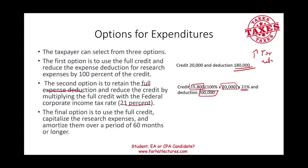The third option is to use the full credit now and amortize the remaining amount. You take the full credit now, take the $200,000, and rather than reduce it immediately, you expense it over 60 months — which is five years — meaning $40,000 of deduction per year for the next four years. Companies do have various options to choose from.